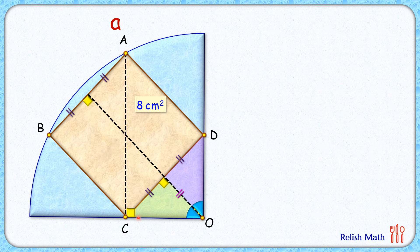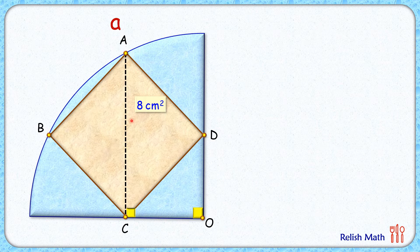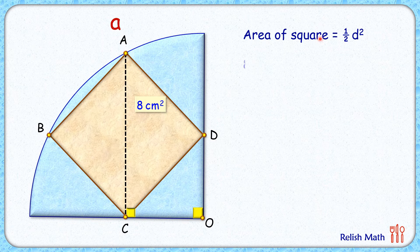Now we know that the area of the square is 8 centimeter square and area of square formula is half of diagonal square. So putting area square as 8 and solving it, we'll get value of d, the diagonal length, is 4 centimeter. Thus the length of AC is 4 centimeter.